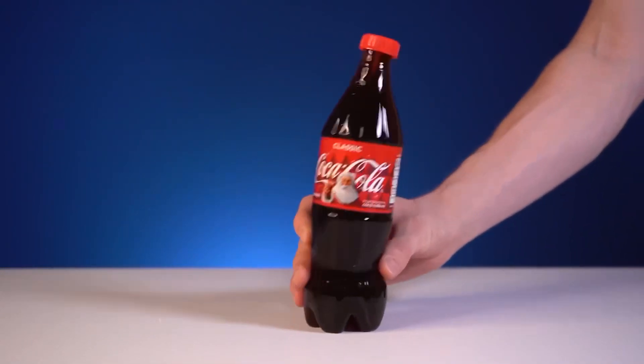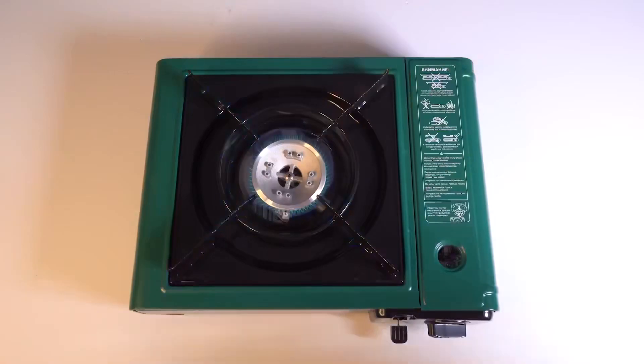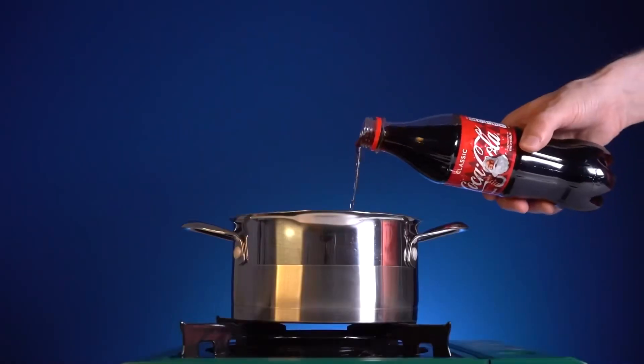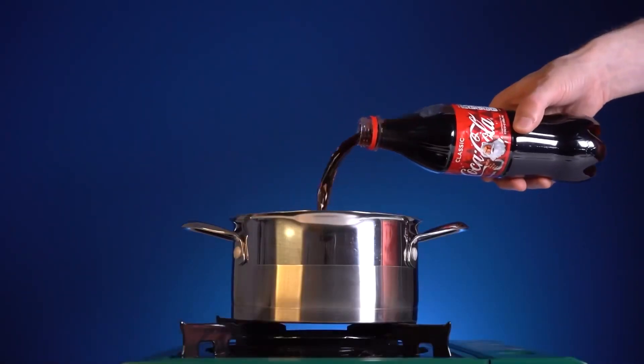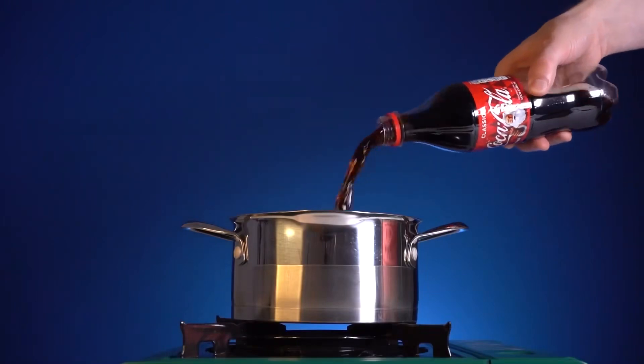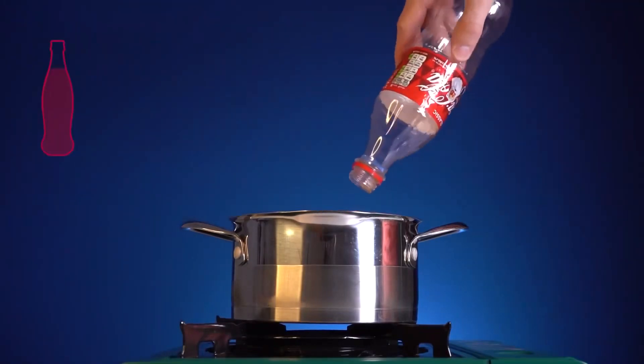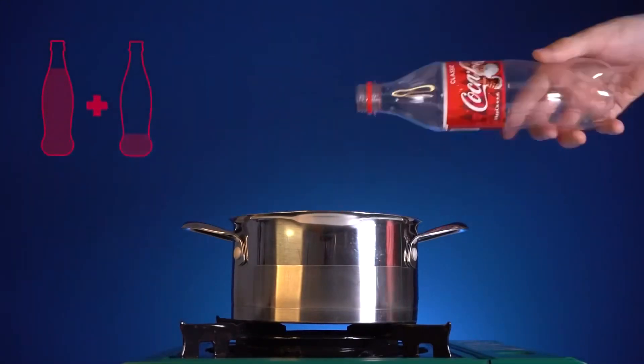Look at this coke bottle. It's like rubber. Now, I'll show you what the secret is. To begin with, put the pan on the fire and pour in a little more than one bottle of coke soda. Add 50 grams of gelatin and mix until smooth.